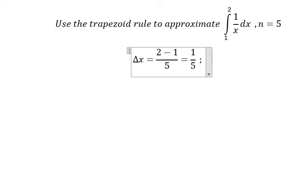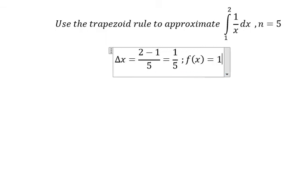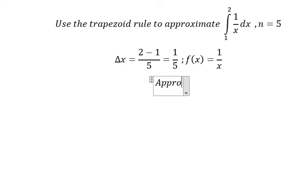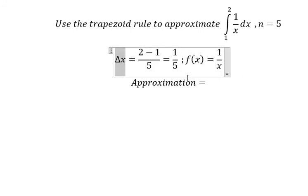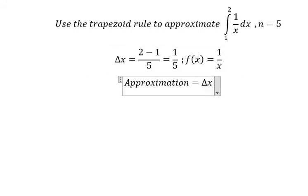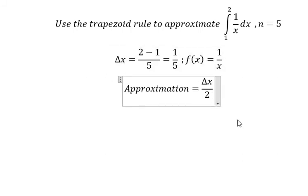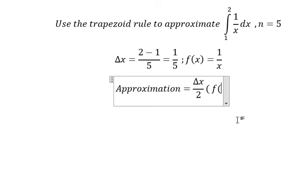And we put the function, which is 1 over x. Now we will apply the formula of approximation. That should be delta x over 2, and we have f of number 1.